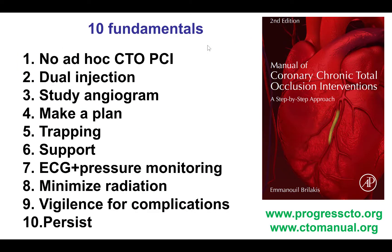To summarize, ten fundamental principles for CTO PCI: First, don't do ad hoc procedures — stop and bring the patient back later. Second, dual injection. Third, study the angiogram for 10 to 15 minutes. Fourth, make a procedural plan, ideally in writing. Fifth, know and use the trapping technique for exchanges. Sixth, get strong guide catheter support. Seventh, continuously monitor the EKG and pressure tracings before, during, and after every injection. Eighth, minimize radiation and contrast. Ninth, watch for complications and be ready to treat them. And tenth, persist to achieve success. Thank you.